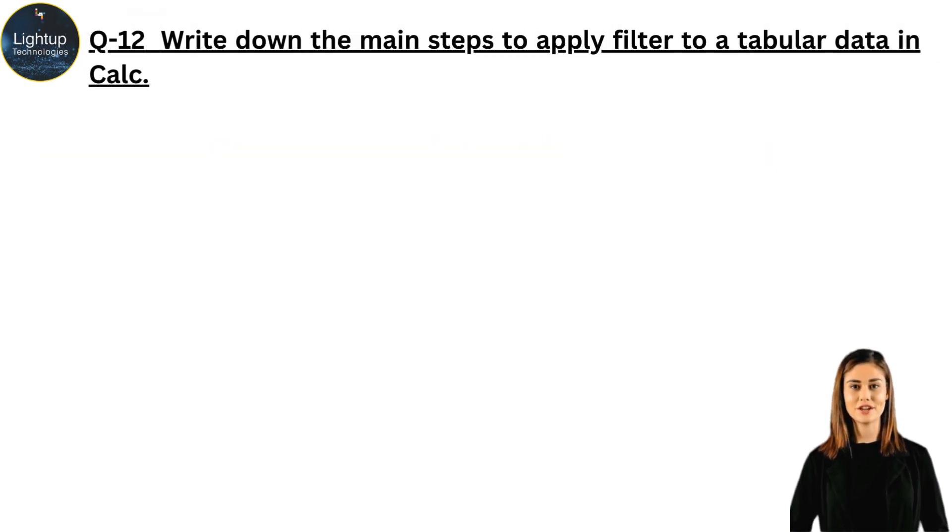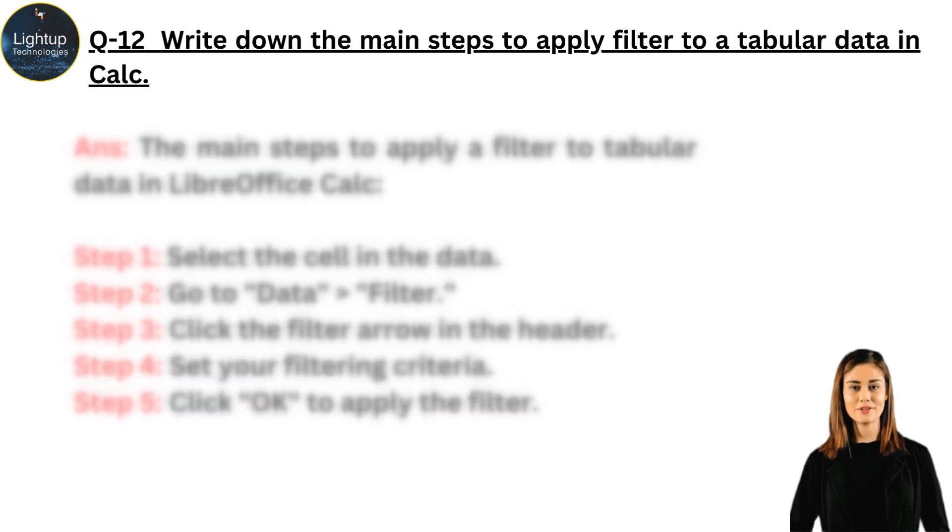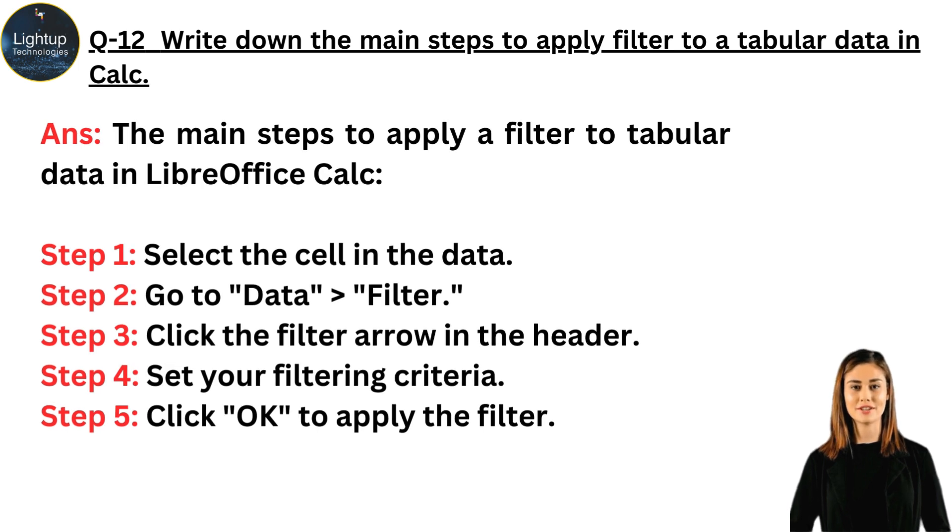Write down the main steps to apply filter to a tabular data in calc. The main steps to apply a filter to tabular data in LibreOffice Calc. Step 1: Select the cell in the data. Step 2: Go to Data, Filter. Step 3: Click the filter arrow in the header. Step 4: Set your filtering criteria. Step 5: Click OK to apply the filter.